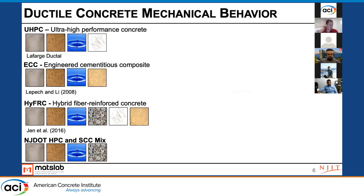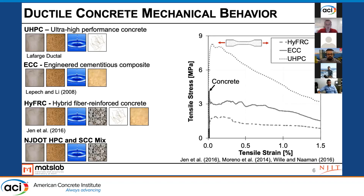This work is sponsored by the New Jersey Department of Transportation as well as the U.S. DOT's University Transportation Center. We're looking at a range of different concrete materials with high ductility. In particular, we're working with UHPC and Lafarge's ductile system. We also are using an engineered cementitious composite, a hybrid fiber reinforced concrete, as well as some standard mixes that NJDOT has in their specifications. Representative tensile stress-strain properties are shown, and I'll be highlighting the UHPC results, although this is part of a larger experimental program with some of these other materials. UHPC is known for its very high strength and dense microstructure in comparison to some of these other materials.